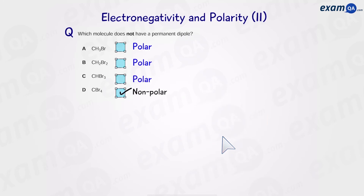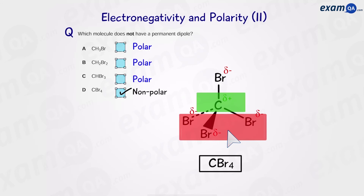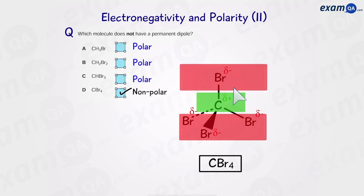The last one is going to be the non-polar molecule, tetrabromomethane. Let's draw it out and see why. Tetrabromomethane looks like this: negative at the bottom, positive in the middle, but then negative on top. So here we don't have two distinct regions. The charges cancel out, and so we have a non-polar molecule.